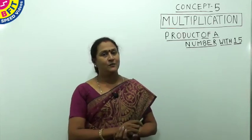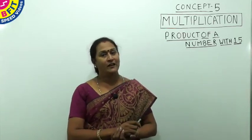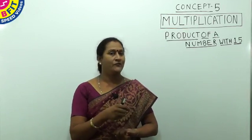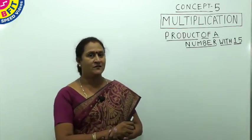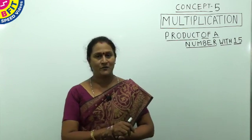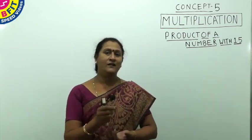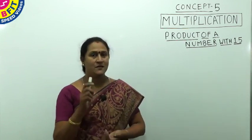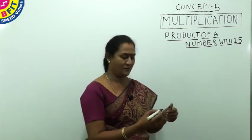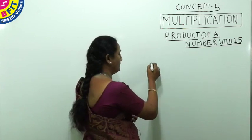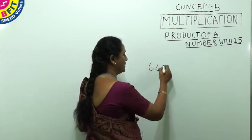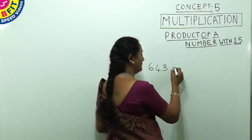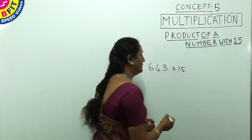The next example is the product of a given number with 15. You will repeatedly face this in simplification questions or in any other topics. So how do we multiply a given number with 15 easily and quickly? Suppose you have the number 643 — we want to find the product of 643 with 15.